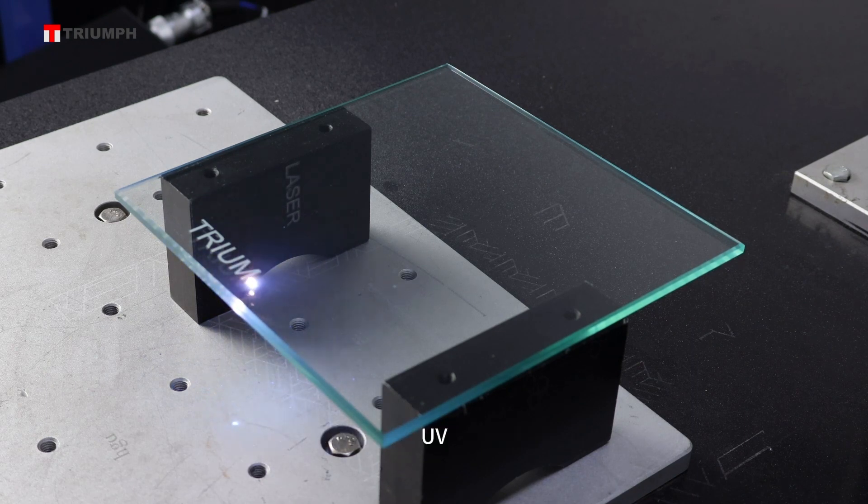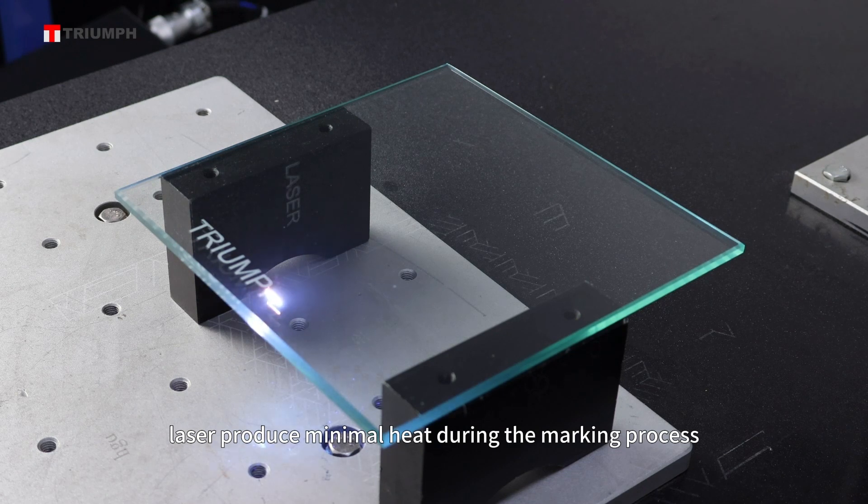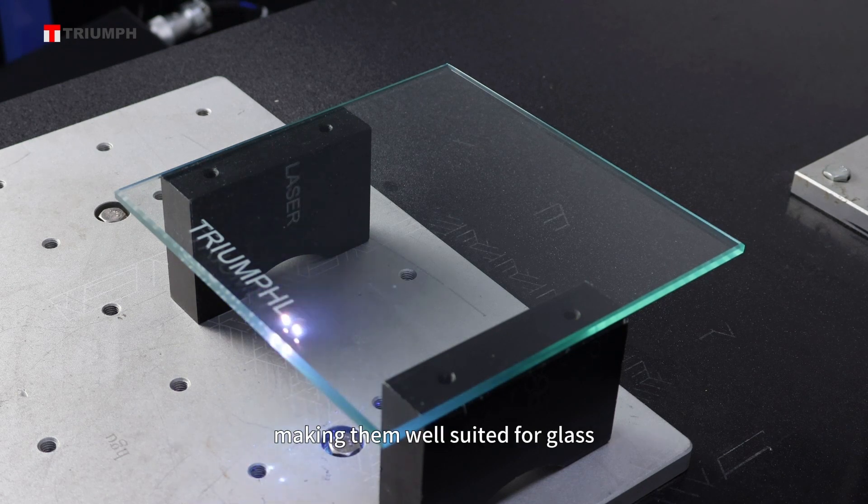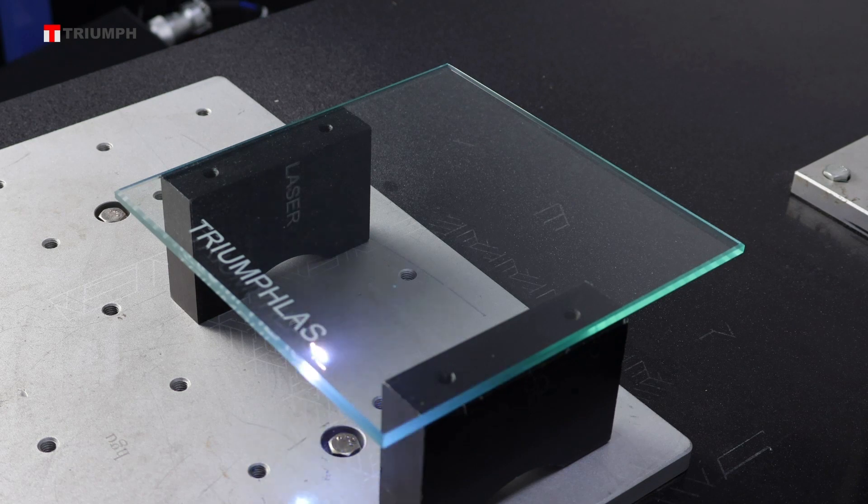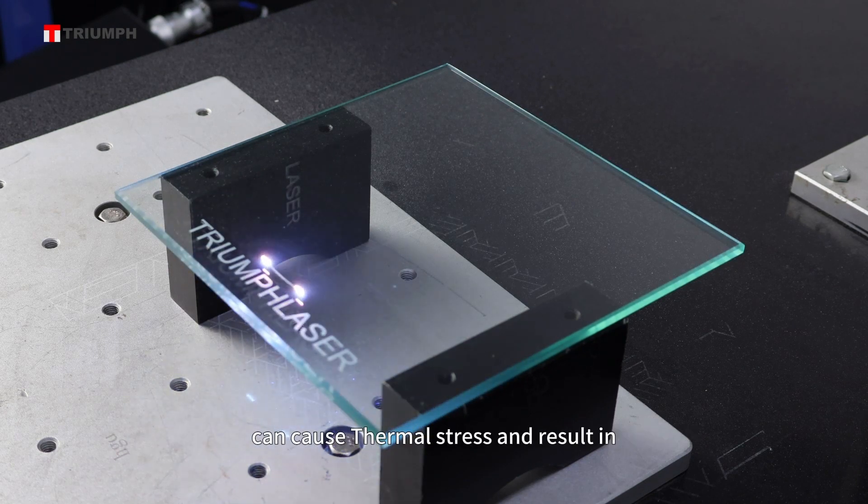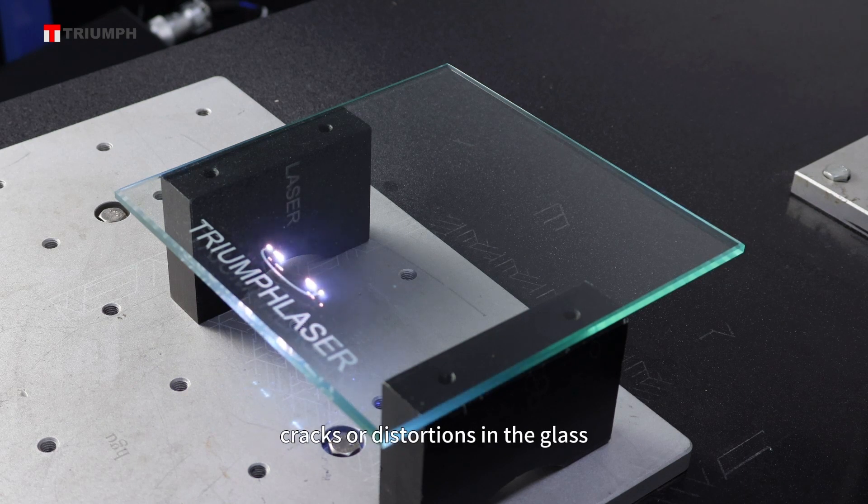Minimal heat generation. UV lasers produce minimal heat during the marking process, making them well-suited for glass, which is sensitive to temperature changes. Excessive heat generated by fiber laser or CO2 laser can cause thermal stress and result in cracks or distortions in the glass, which is less of a concern with UV lasers.